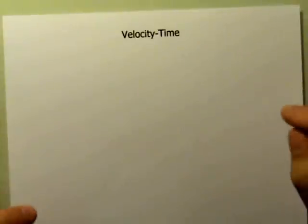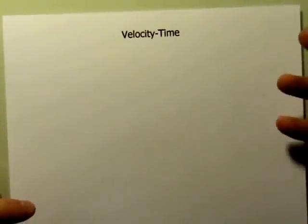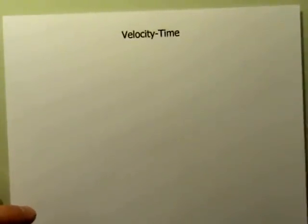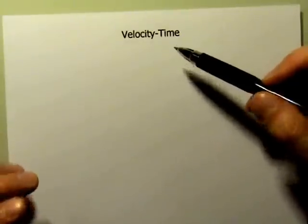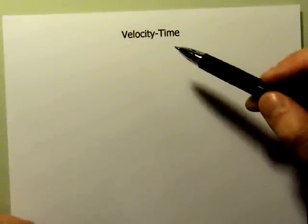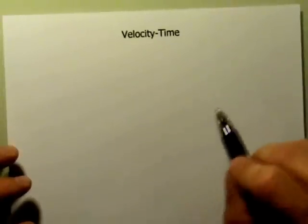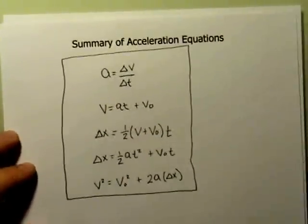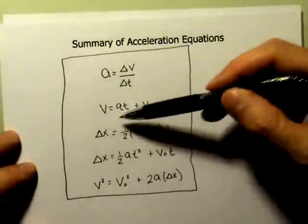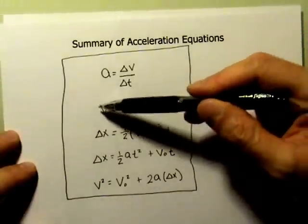Besides the displacement-time graph, we look a lot at velocity-time graphs. Let's think about the equations that would govern the motion on the velocity-time graph — in other words, the equations that express the line or curve we're going to see. Going back to the equations, there are actually a couple that have both velocity and time. Here's one equation that's going to govern the line.